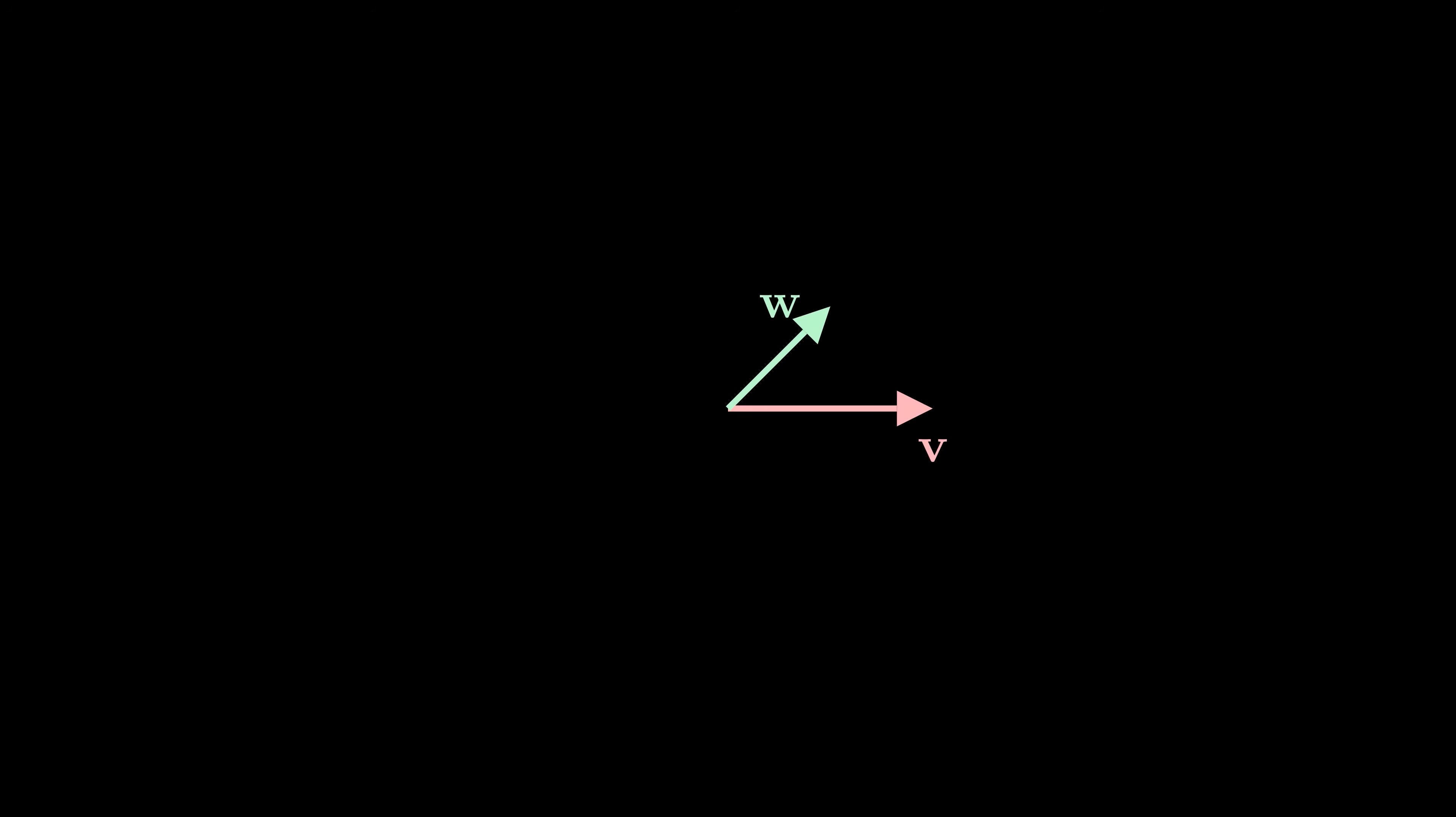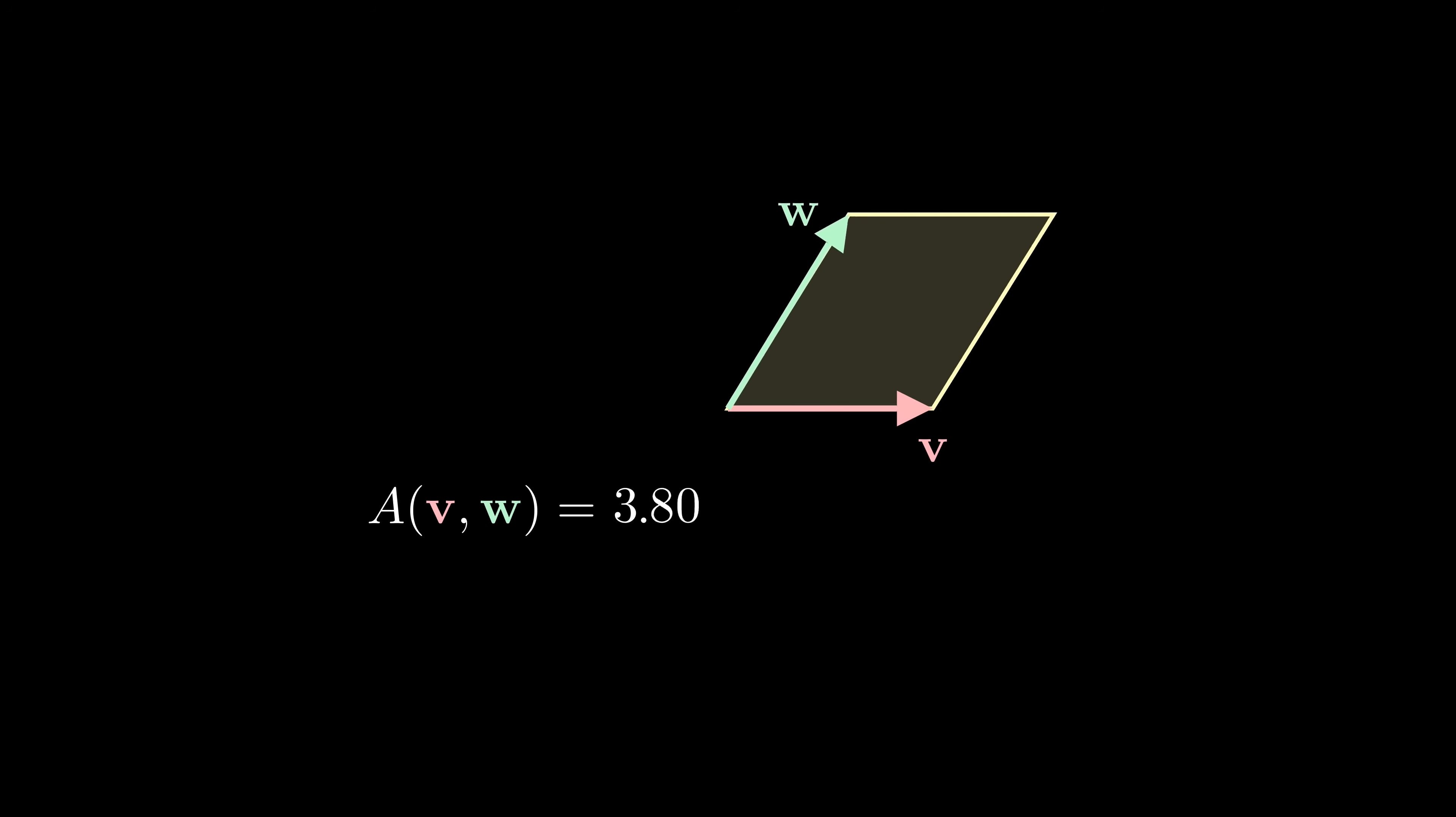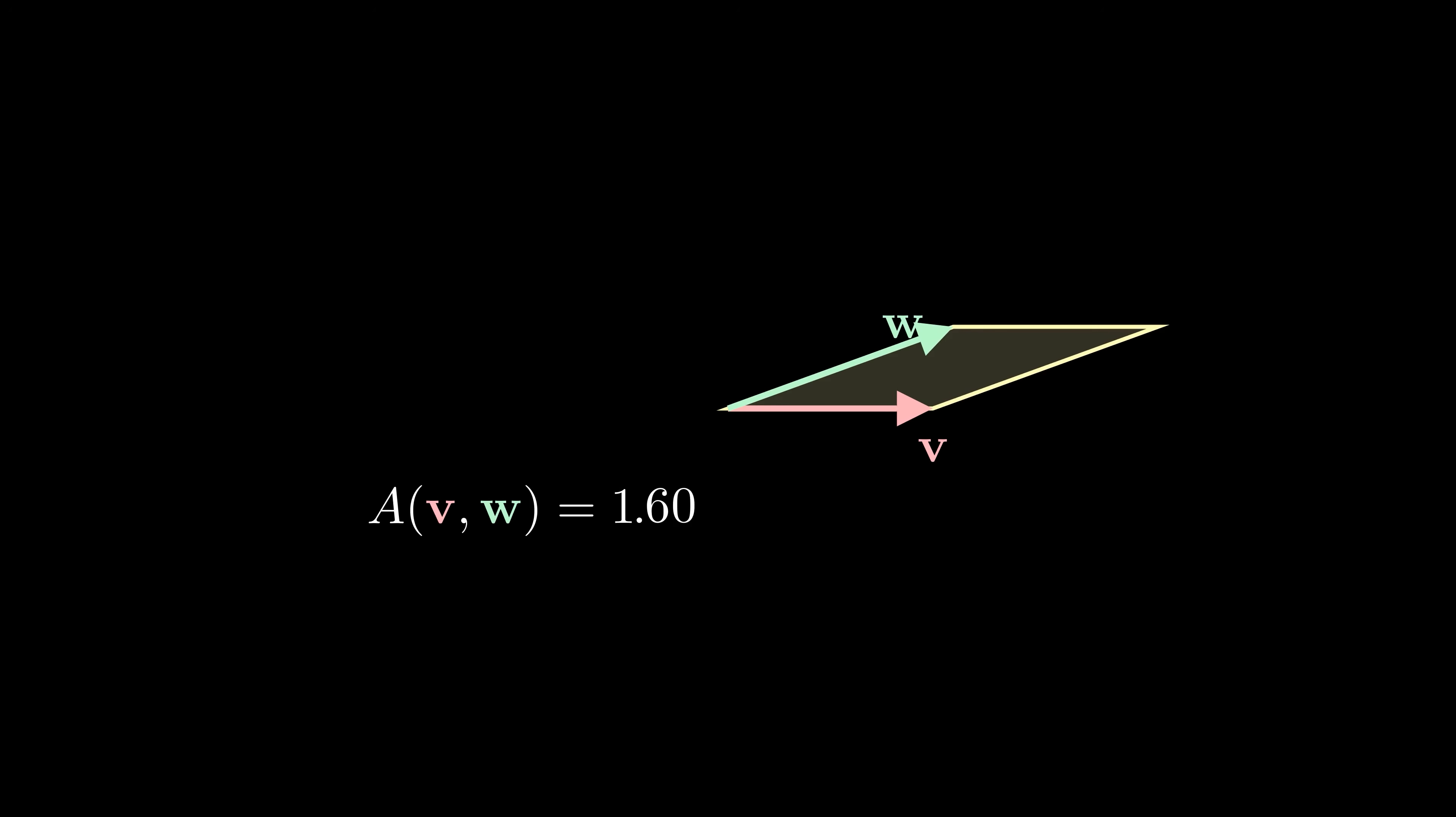Picture two vectors v and w starting at the same point. If we slide a copy of w along v, and a copy of v along w, we get a parallelogram. Let's consider a function A that measures the area of this parallelogram. As we shift the vector tips around, the area changes as well.